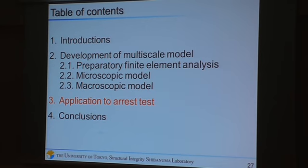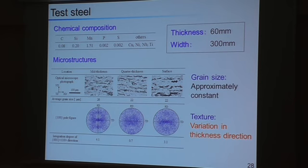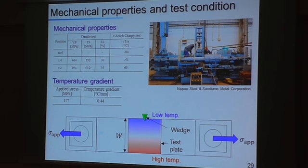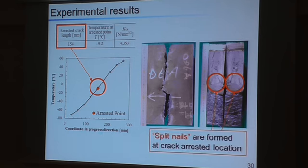Finally, we applied the proposed model to the temperature gradient crack arrest test as validation. The test steel has a non-homogeneous distribution of texture in the thickness direction, and the temperature was distributed from low to high as shown in this figure. The crack was initiated by impact loading. Here is the experimental result: the crack was arrested at 154 mm in the experiment, and as shown in the fracture surface figure, split nails are formed at the crack-arrested location.